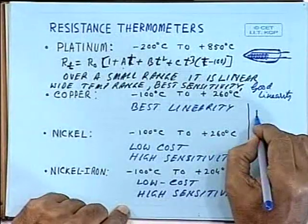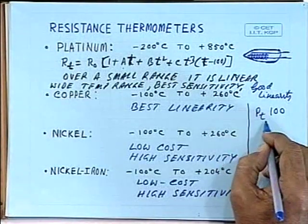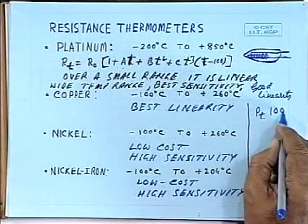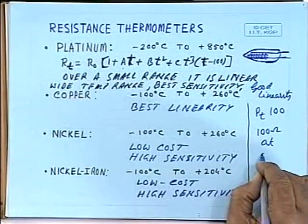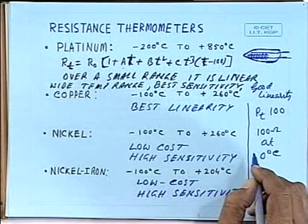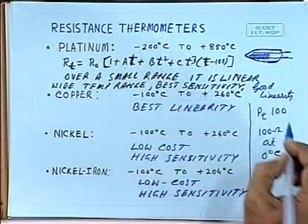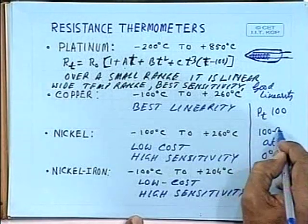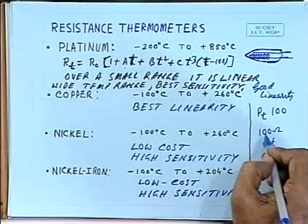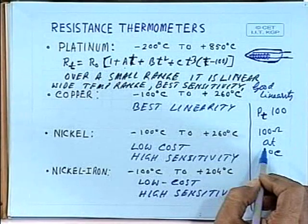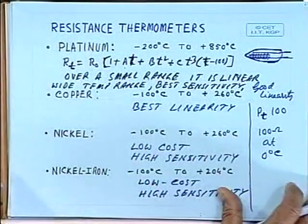The most popular is the platinum resistance thermometer. For example, the PT-100 is a widely-used, commercially available device. PT-100 stands for a resistance of 100 ohms at 0°C, and as temperature changes, the resistance changes according to the formula. To accurately measure the change in resistance, you will require a bridge arrangement, which will be discussed later under signal conditioning circuits.